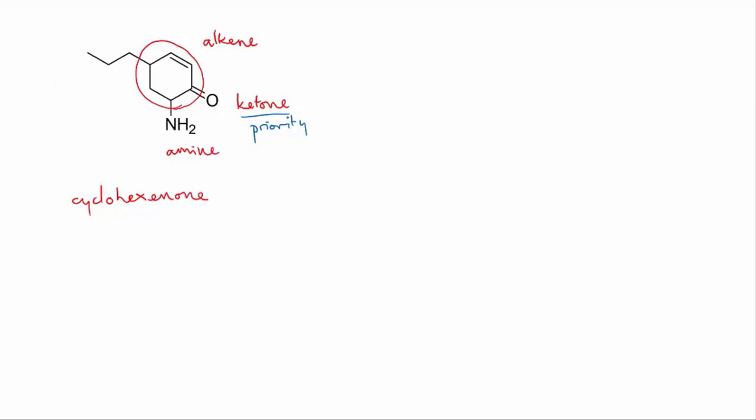Now everything else is named as a substituent. First we need to work out which way round the ring will go with our numbering. We start at the ketone since it's the priority functional group. If we number clockwise, then we'll get the amine on number two, the propyl on number four, and the alkene starts on number five. So that gives us two, four, five.